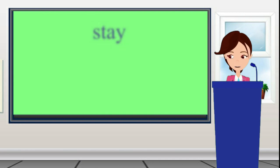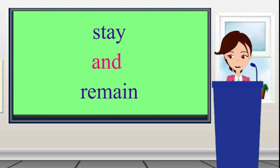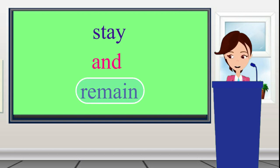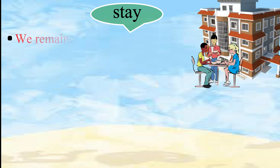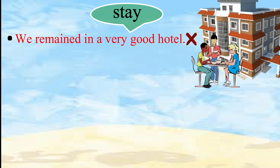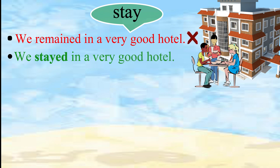Have a look at this set of words: stay and remain. To stay means to live for a short time as a guest or a visitor. To remain means to be left after part has been taken or destroyed. For example, it would be wrong to say 'We remained in a very good hotel.' The correct sentence is 'We stayed in a very good hotel.'